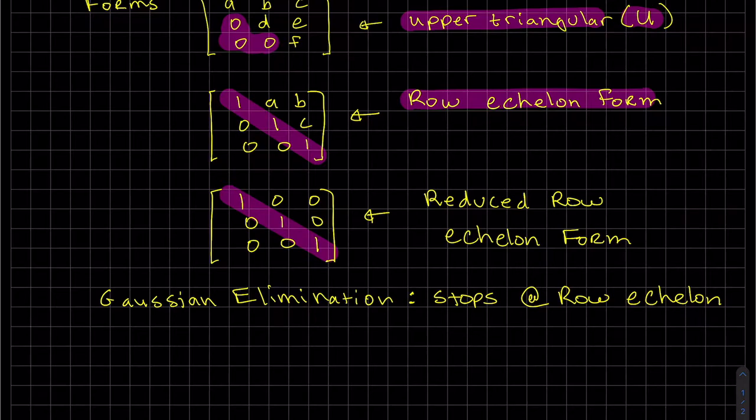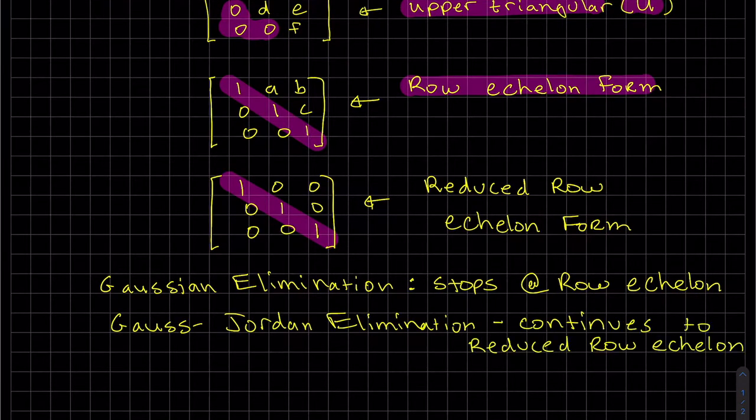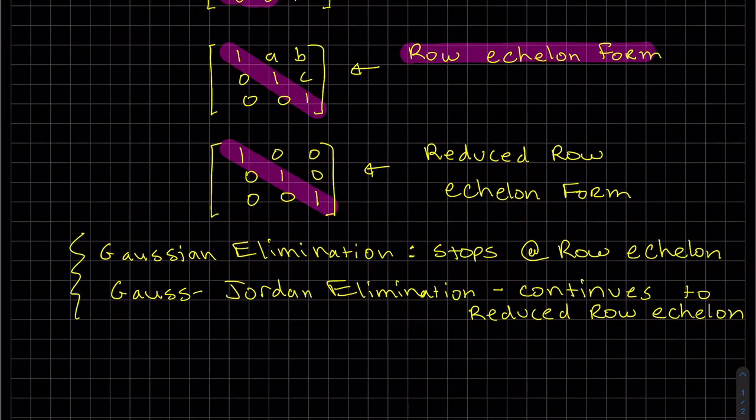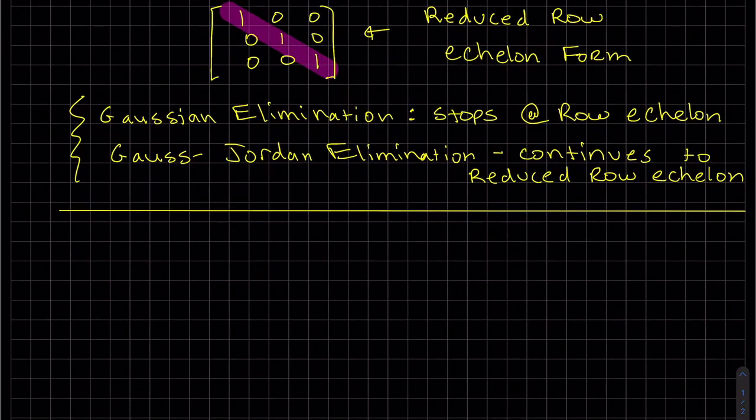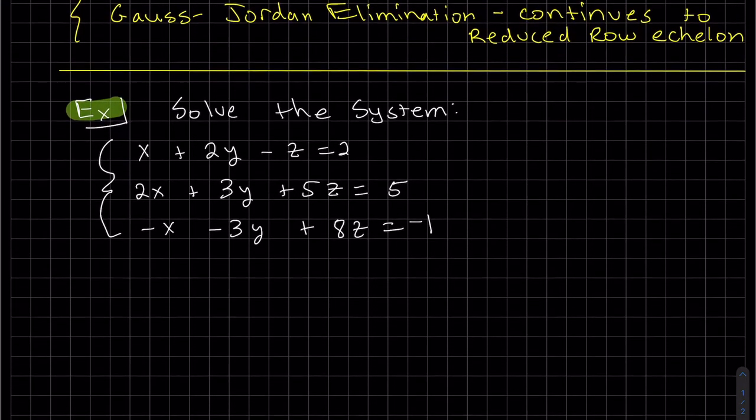So Gaussian elimination basically just stops at row echelon form. Which way will we go? It's basically a personal choice. I actually personally sometimes do a combination. I like to have a zero there or a zero there. So let's solve using matrices and this process.